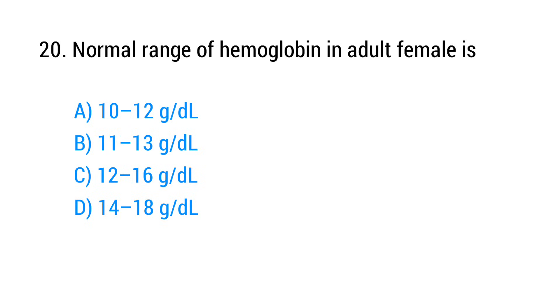Question number 20. Normal range of hemoglobin in adult female is? The right answer is option C: 12 to 16 gram per deciliter.